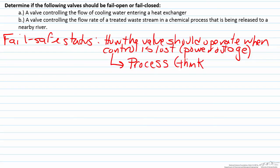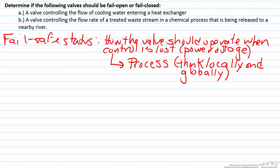When analyzing the process, you want to make sure to think both locally at the stage of the particular unit operation, but also globally. In many situations what is exiting a heat exchanger will eventually go into multiple unit operations after that. So when deciding if the valve should fail closed or fail open, you must take the consequences of what is happening downstream into account.